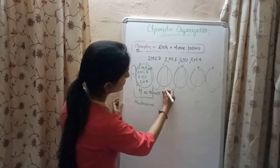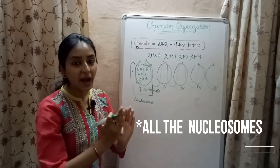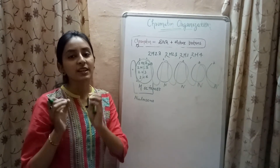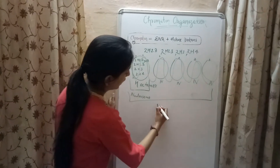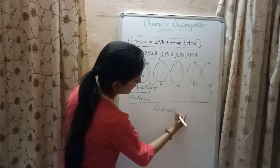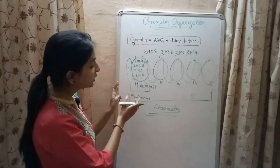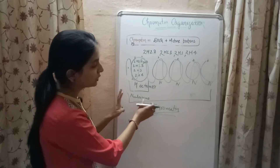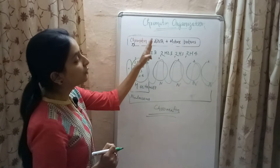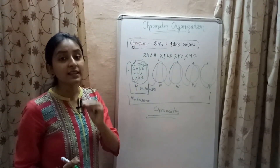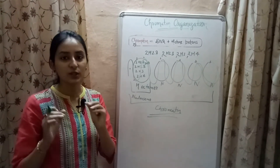All these structures are nucleosomes. All the nucleosomes combining together inside the nucleus of a eukaryotic cell form the structure we call chromatin. We can also say that chromatin is a polymer formed of monomeric units known as nucleosomes. Chromatin is a complex formed of DNA and histone proteins, or chromatin is a polymer of nucleosomes present inside the nucleus of a eukaryotic cell.